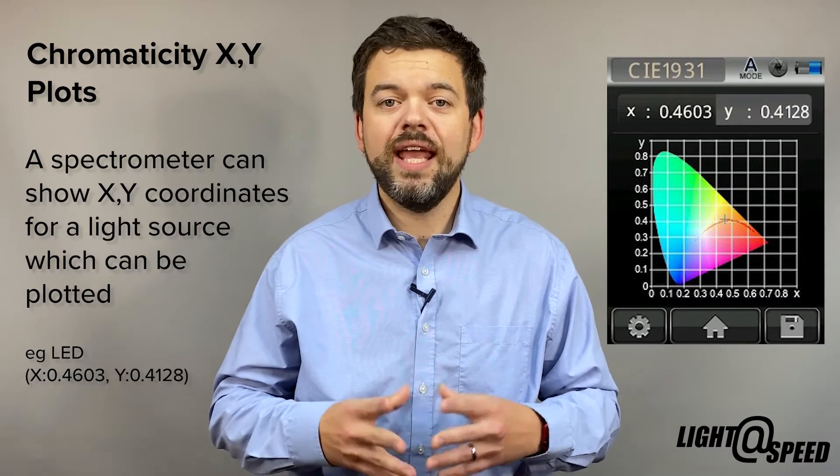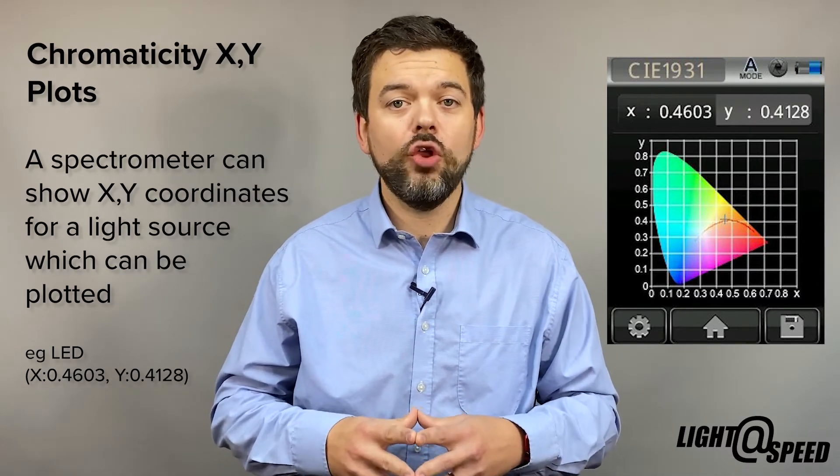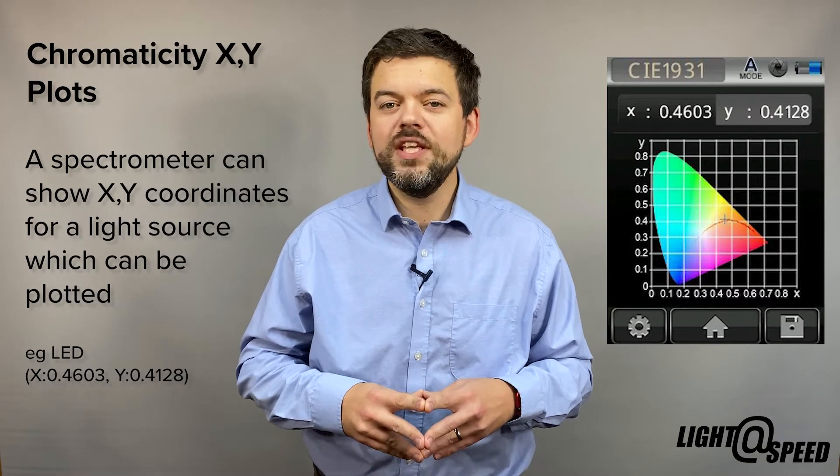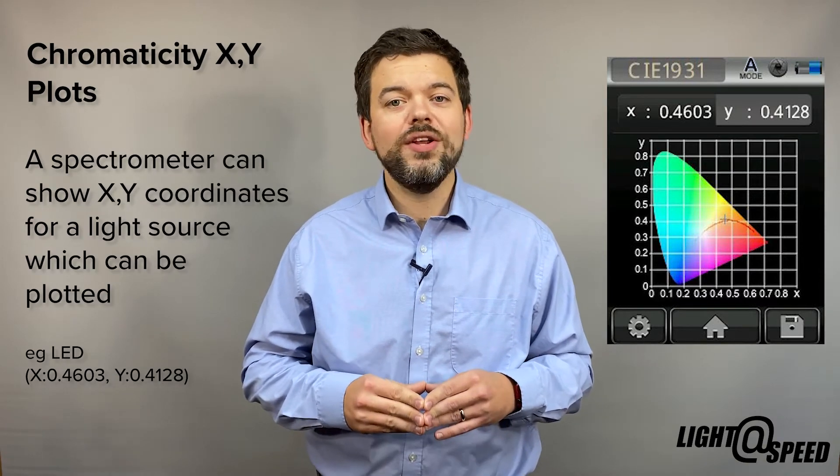If you measure chromaticity readings for these various light sources using a spectrometer, you are given X and Y coordinates which you can plot on that chromaticity graph. However useful these two number coordinates are, it's very hard to get any actionable data from them unless you're looking at a live graph on a screen.